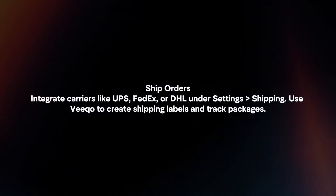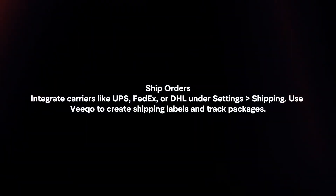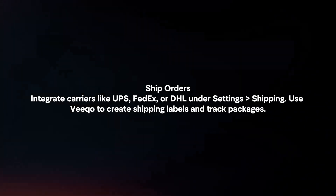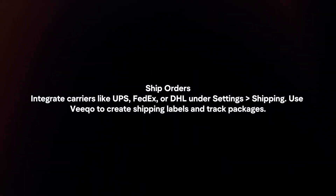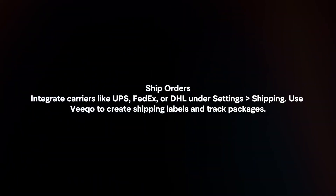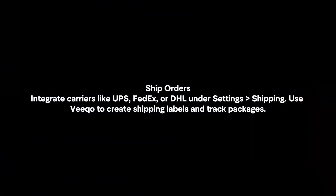Ship orders. Integrate carriers like UPS, FedEx or DHL via Settings, then Shipping. Use Veeco to create shipping labels and track packages.